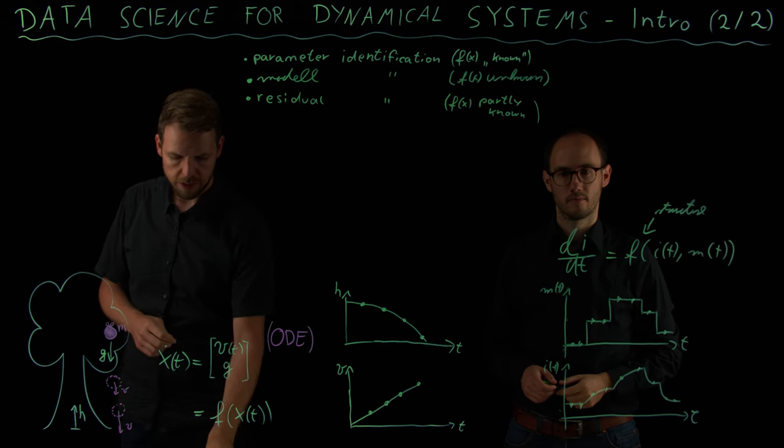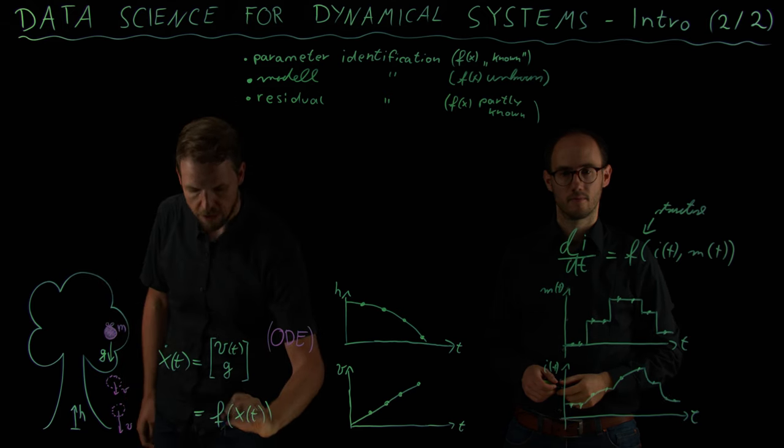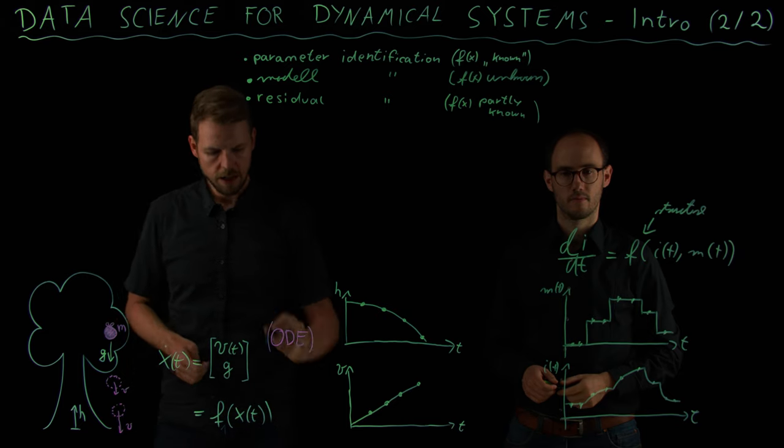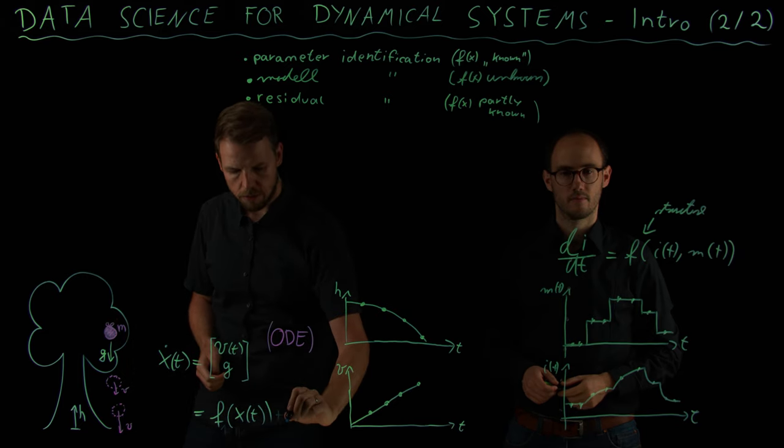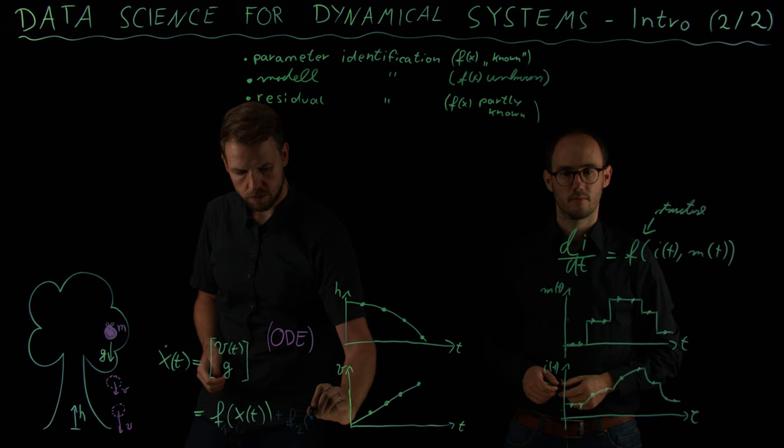But what we did not consider was the air drag during the apple falling. So maybe there is the case that this right hand side that we have modeled is just F1 of X, and it consists of a second term F2 of X that we do not know at all.